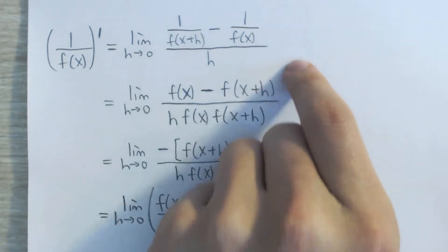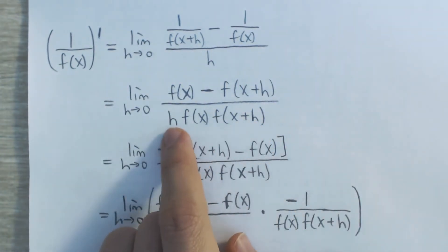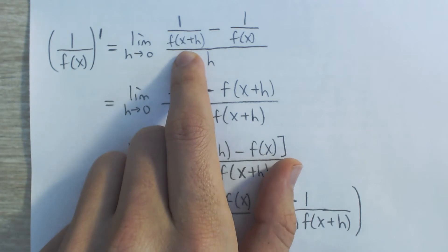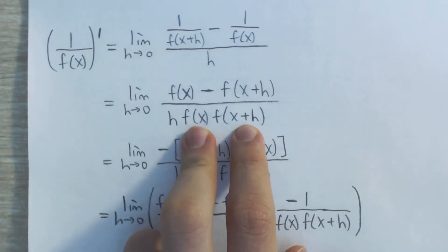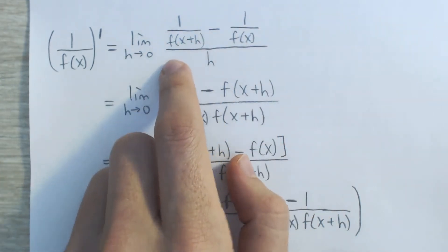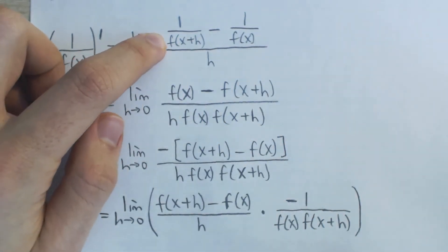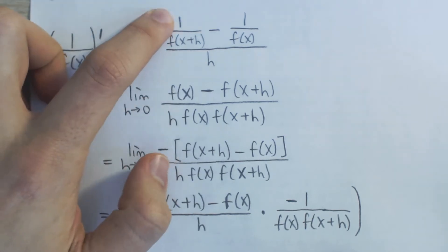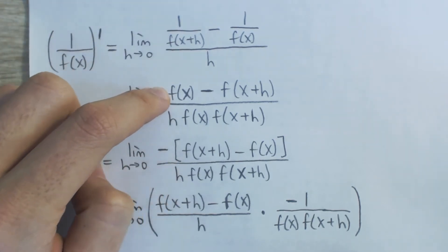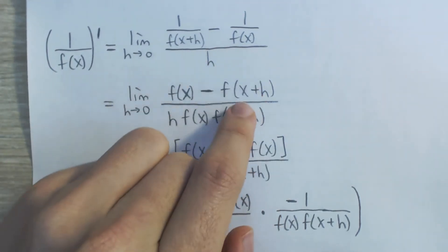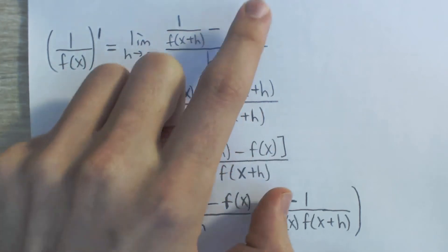When we multiply both numerator and denominator by f of x and f of x plus h, the denominator is simple multiplication. In the numerator, it distributes to both terms. In the first term, f of x plus h cancels with its denominator, leaving f of x. In the second term, f of x cancels, leaving f of x plus h.